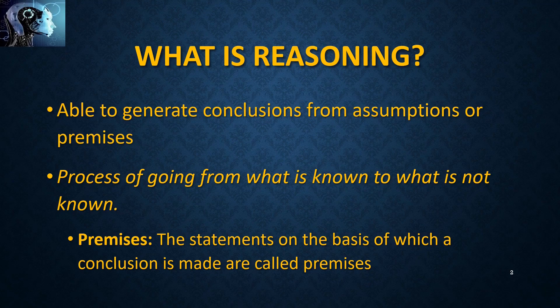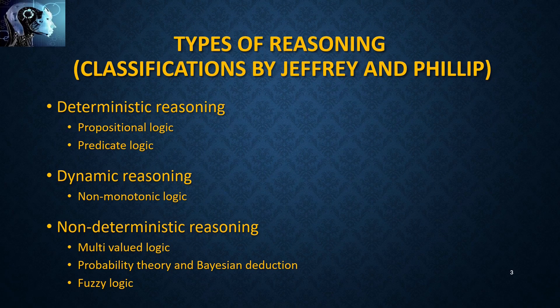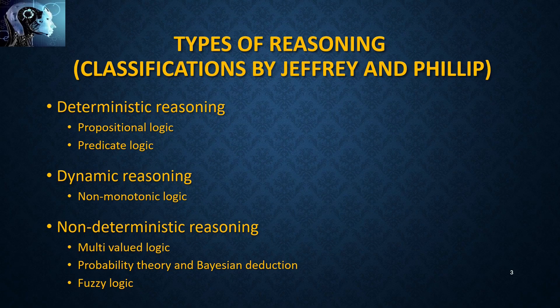In the next step, we have to find a way to explain this reasoning process. Most frequently, we use logical methods. Logical methods have emerged from philosophy and from mathematics. There are several classification techniques. One methodology presented by Jeffrey and Philippe basically includes three types of reasoning processes: deterministic reasoning, dynamic reasoning, and non-deterministic reasoning.